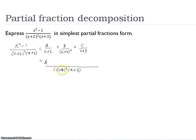So A, we will multiply by another x plus 2 and x plus 3. Plus B, as we have x plus 2 squared, so we multiply by another x plus 3. So for C, we will multiply by x plus 2 squared.